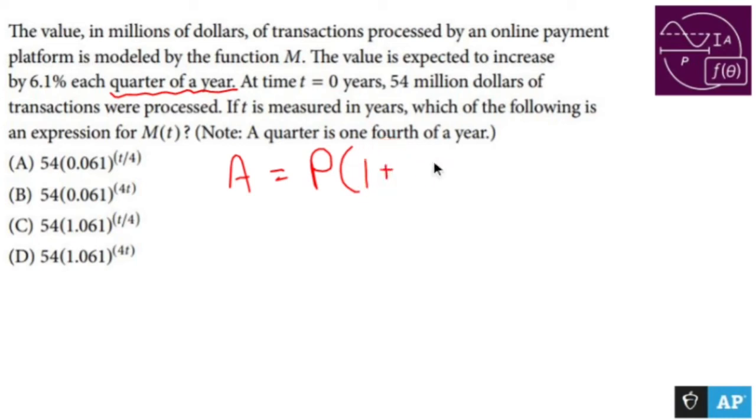times one plus the rate as a decimal over the number of times compounded in a year, to the number of times compounded in the year. Again, times T is your time in years.